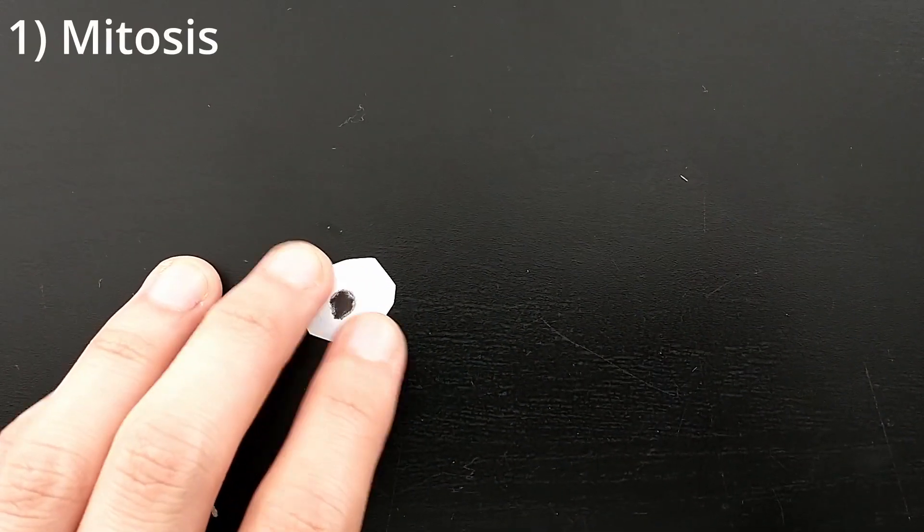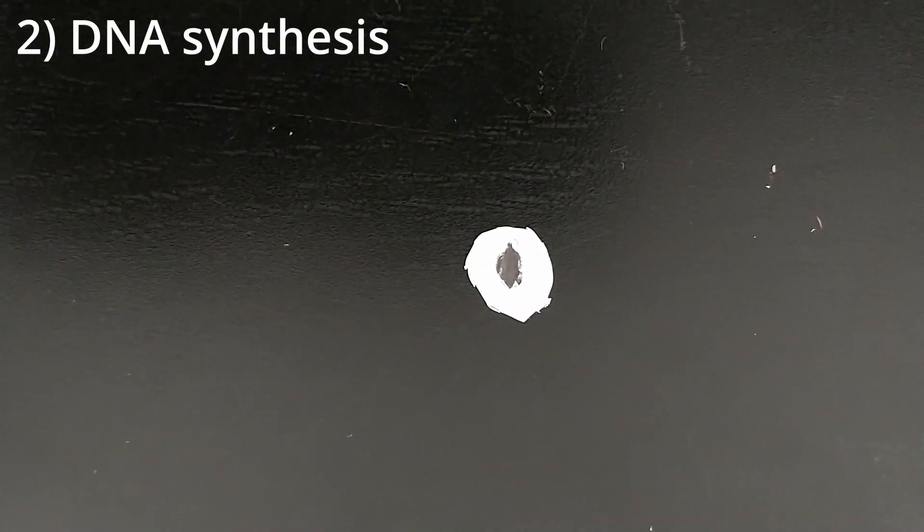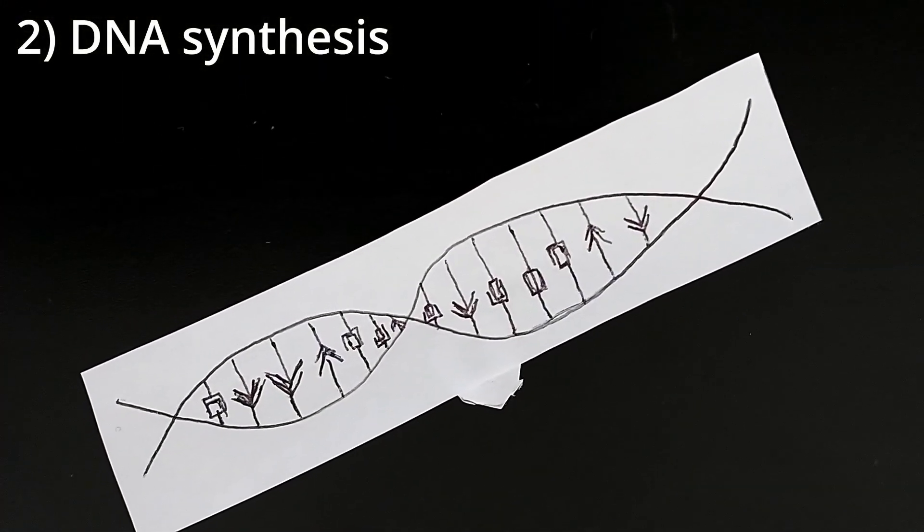First of all, your cells clone themselves. Like, all the time. To do this, everything inside the cell needs to clone itself as well. This includes the genetic code, your DNA.